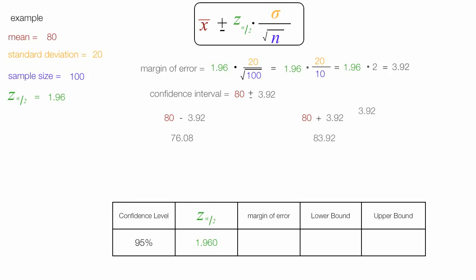The margin of error is 3.92, and I'll put that into the table. The lower bound is 76.08, and the upper bound is 83.92, the upper bound of the confidence interval.